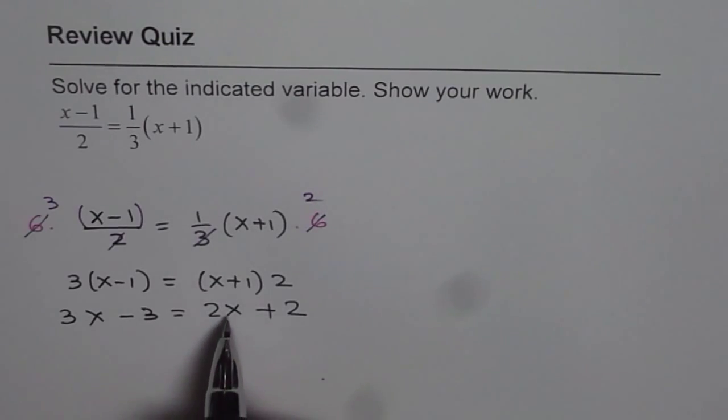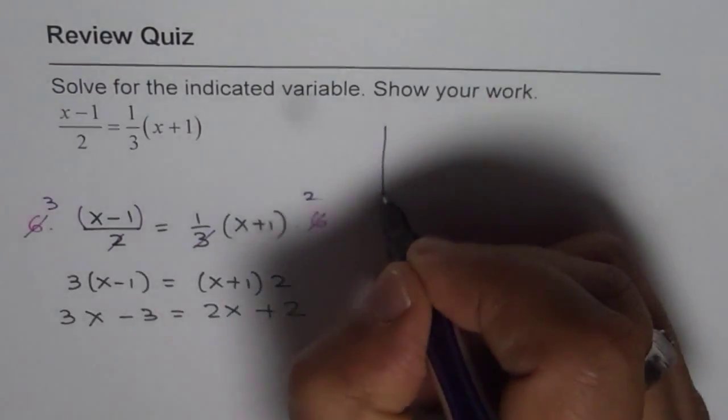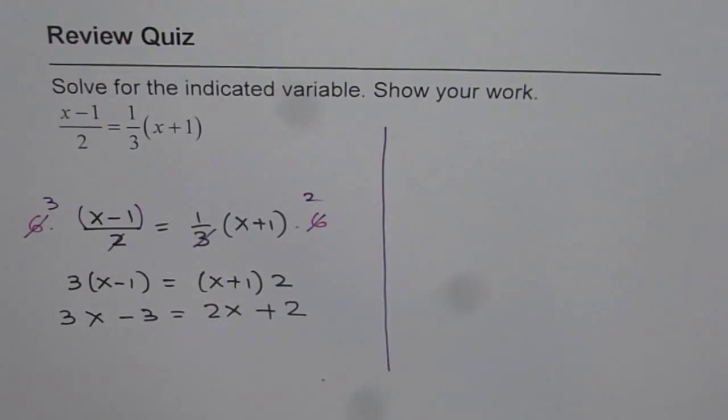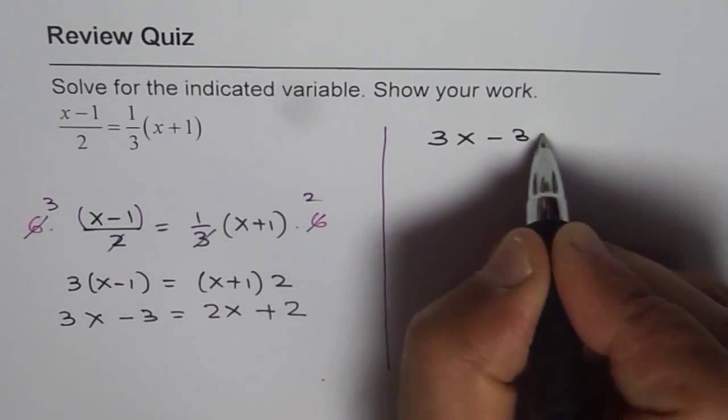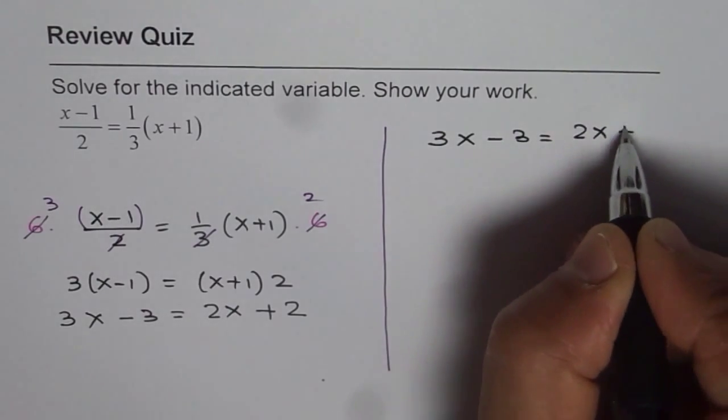The next step should be bring the x's together and the numbers together. That is to get the variables on one side of the equation and the constants on the other side. Let me rewrite this equation here. We have 3x minus 3 equals to 2x plus 2.